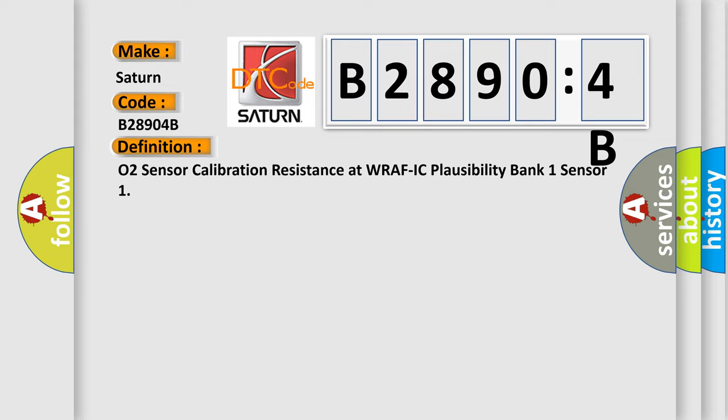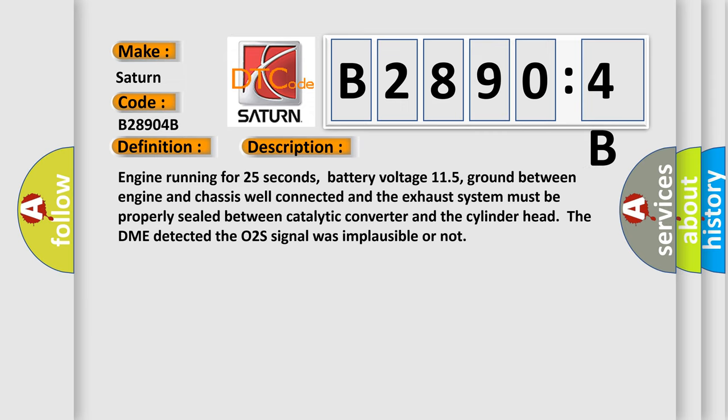And now this is a short description of this DTC code. Engine running for 25 seconds, battery voltage 11.5V, ground between engine and chassis well connected, and the exhaust system must be properly sealed between catalytic converter and cylinder head. The DME detected the O2S signal was implausible or not. This diagnostic error occurs most often in these cases.